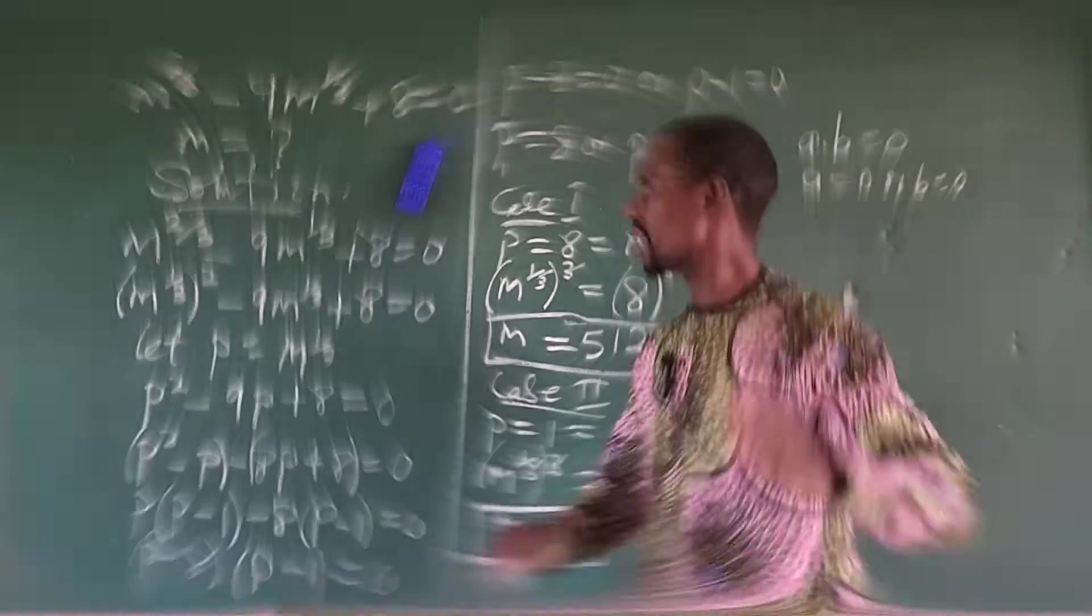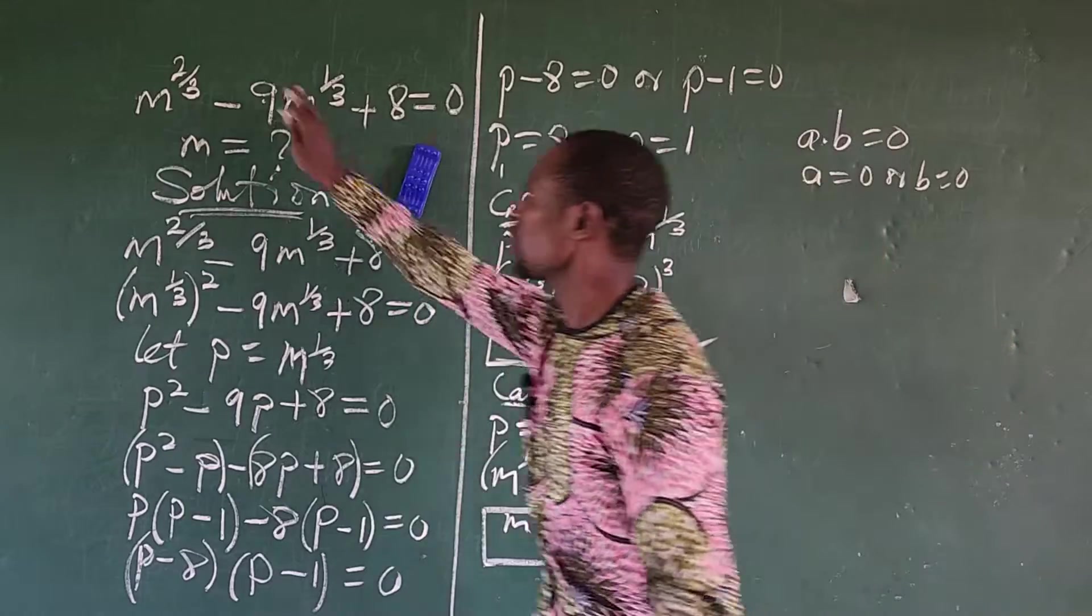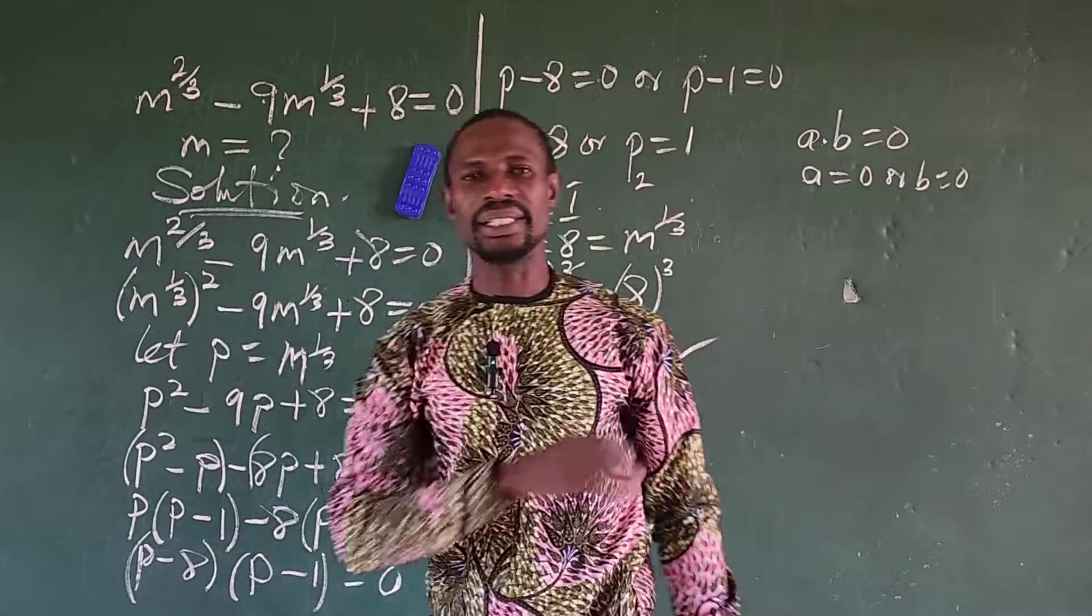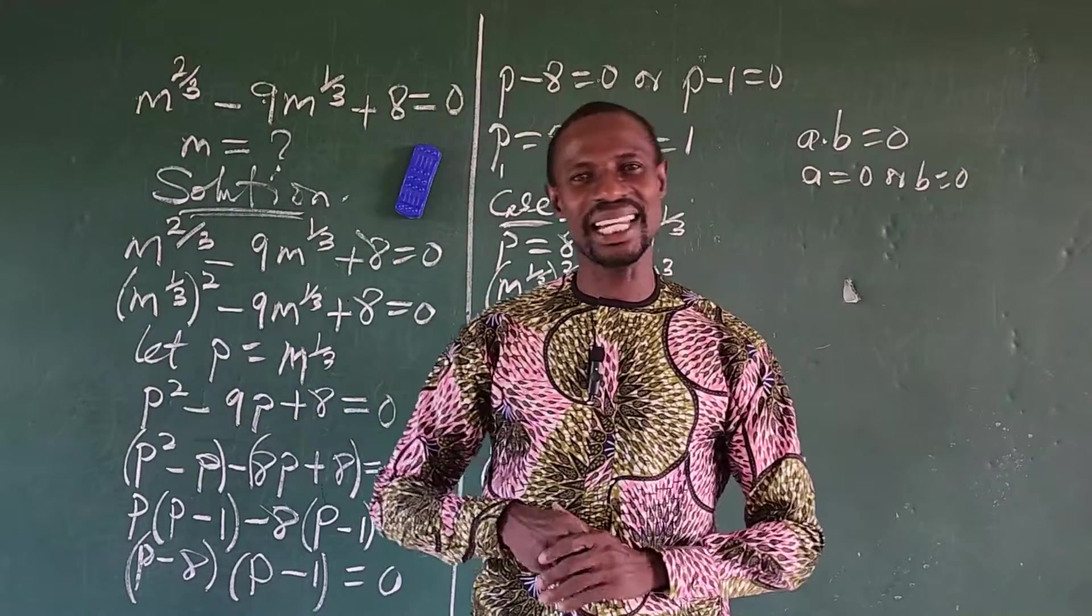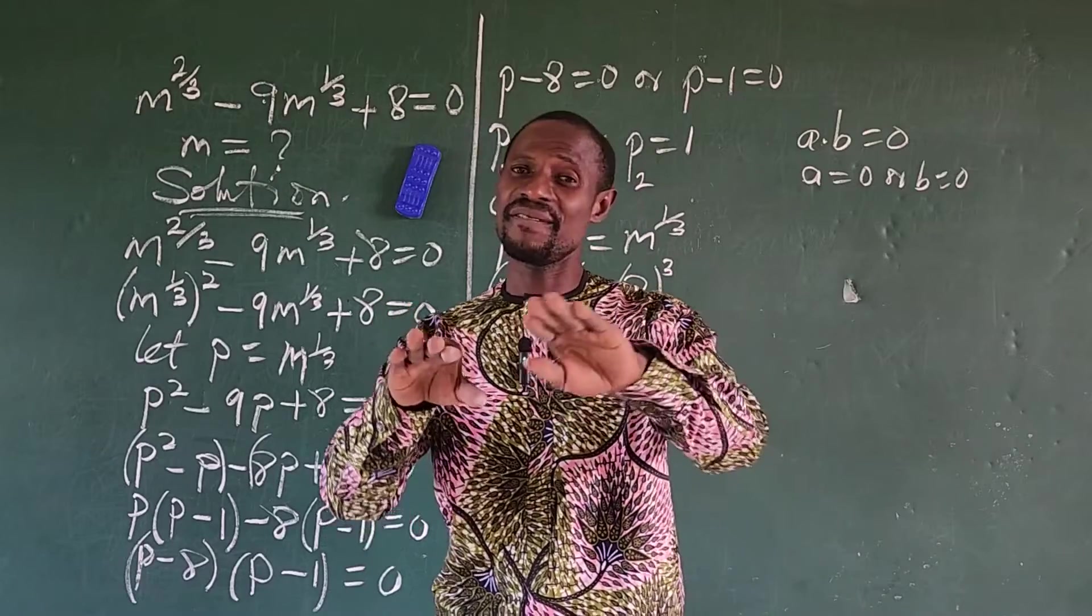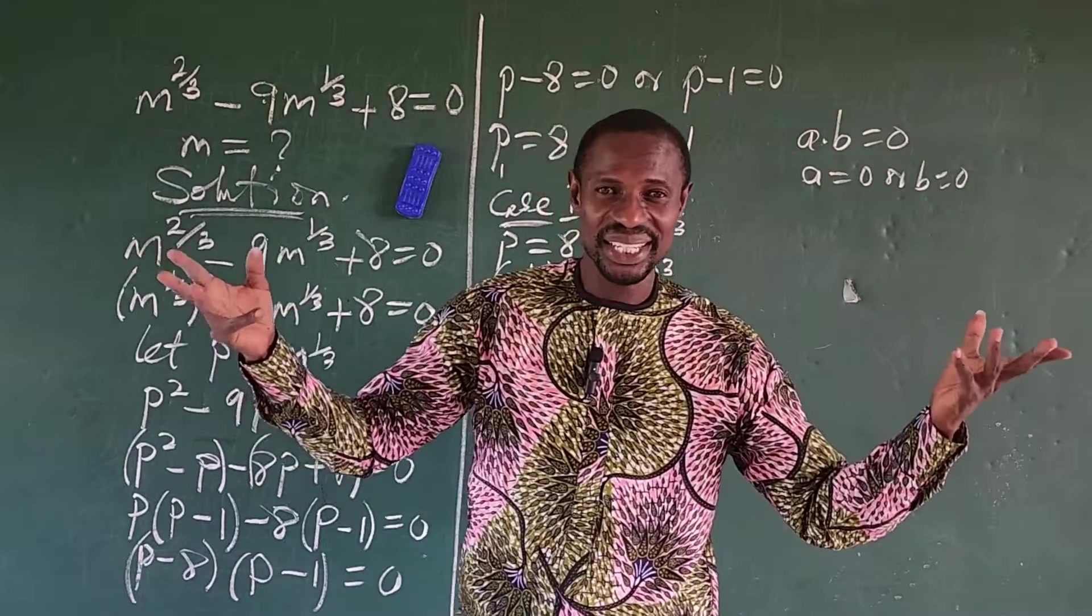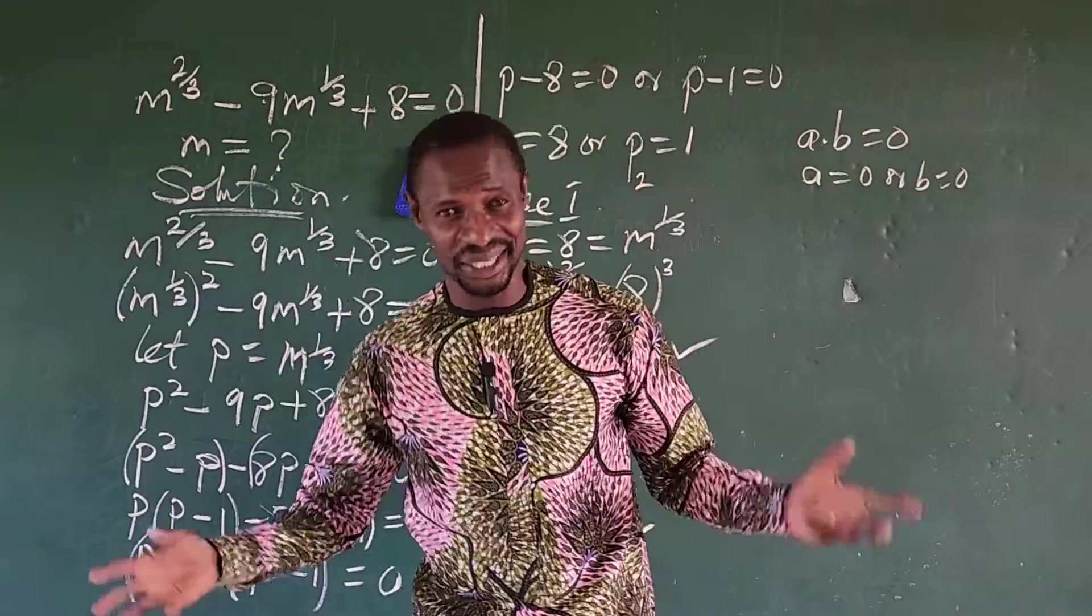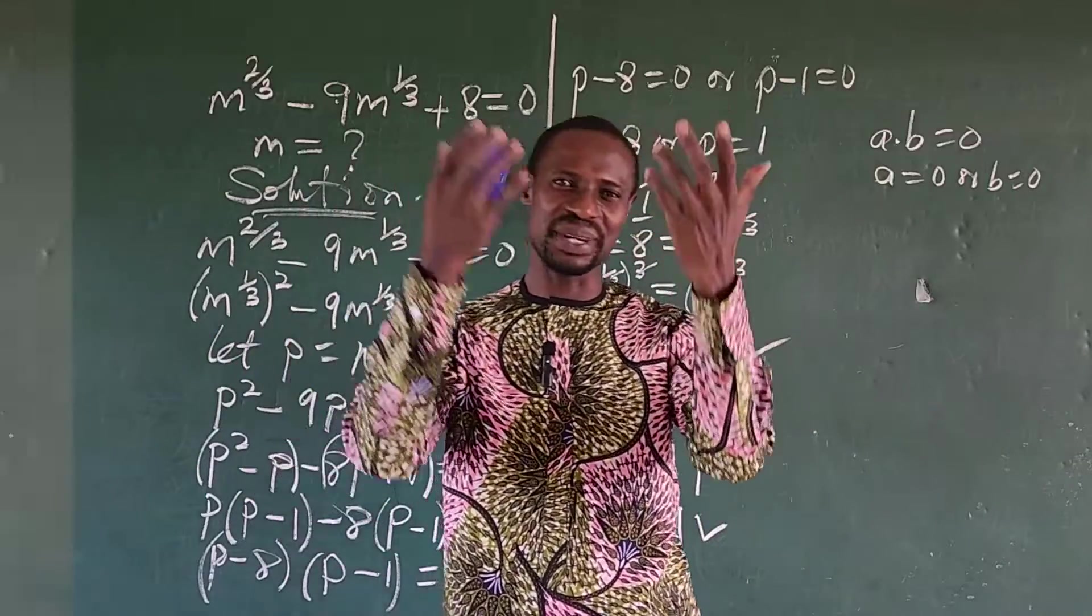Now I've gone ahead to check. If you substitute either 1 or 512 into the original equation, the left hand side is going to give us the right hand side, which is 0 equals 0. So like I said earlier, this is a very simple challenge for beginners. But I brought this question just for us to have a cruise, just to have some fun. It's not all the time we solve rhetorical questions. At times we just have fun. At times we just have to exercise our brain.